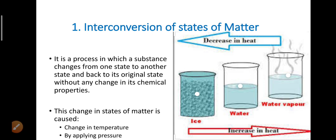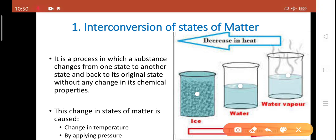Interconversion of states of matter. It is a process in which a substance changes from one state to another and back to its original state without any change in its chemical properties. It means, suppose we are taking a beaker full of ice. When we are increasing the heat, ice changes to water. And again, when we are increasing heat in water, it changes to vapour.